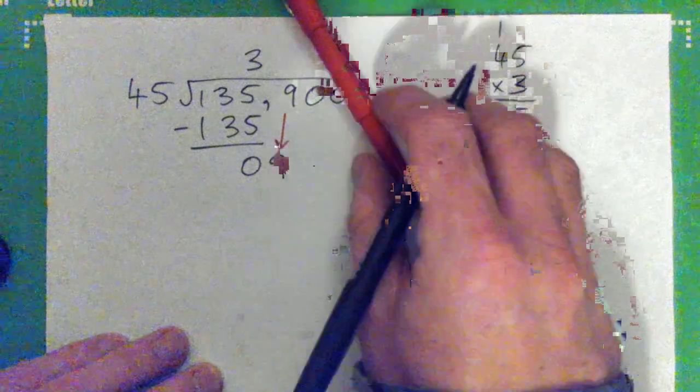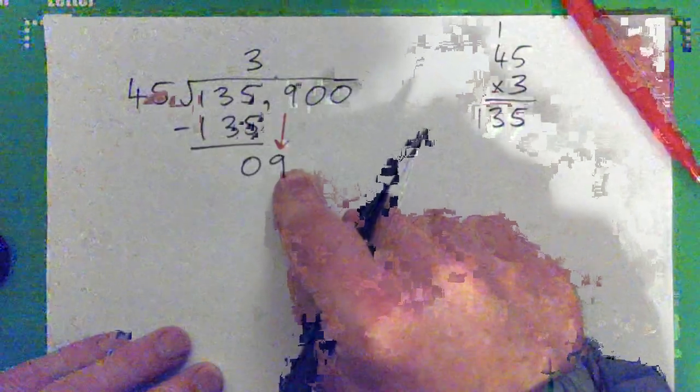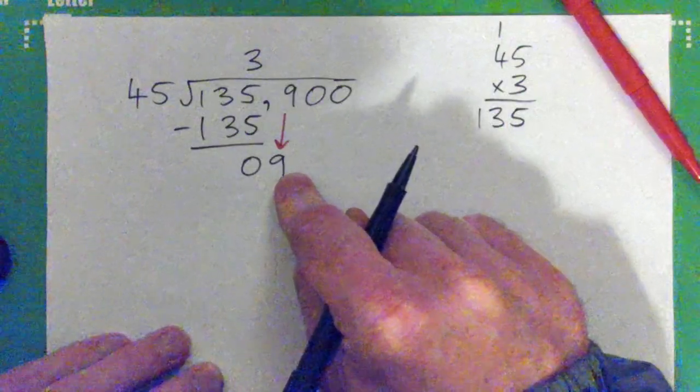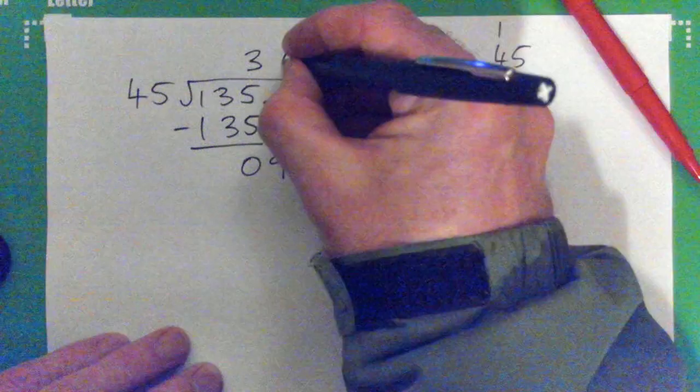And then bring this digit down. Now what's 45 into 9? 0. Now what do we do?